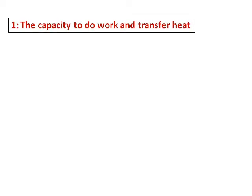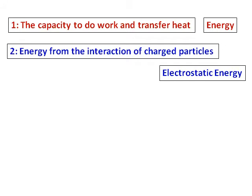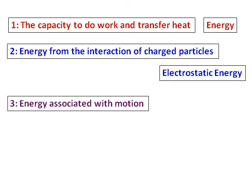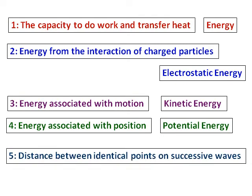Before we start, let's be familiar with some of the terms. The capacity to do work and transfer heat is called energy. The energy from interactive charged particles we call electrostatic energy. The energy associated with motion is kinetic energy, and the energy associated with position is potential energy. The distance between two identical points on successive waves we call wavelength. So when we use these words — energy, wavelength, potential energy, kinetic energy — it should make more sense to you now.